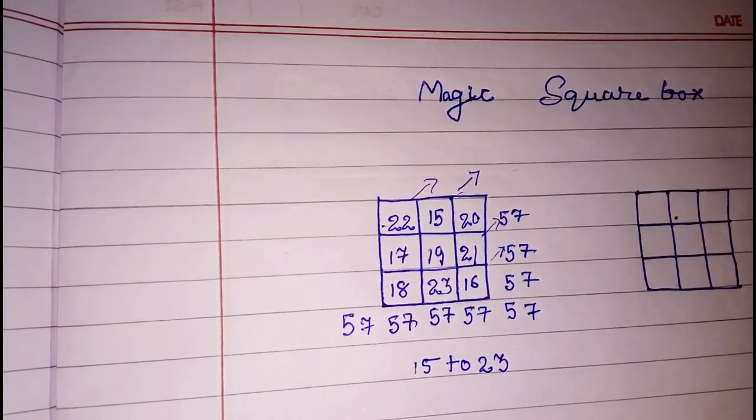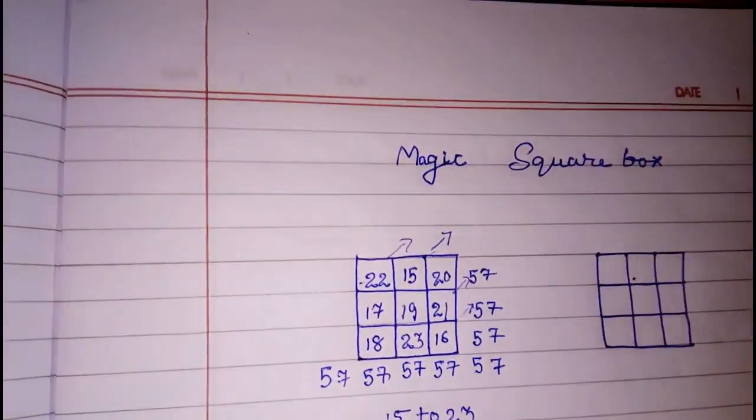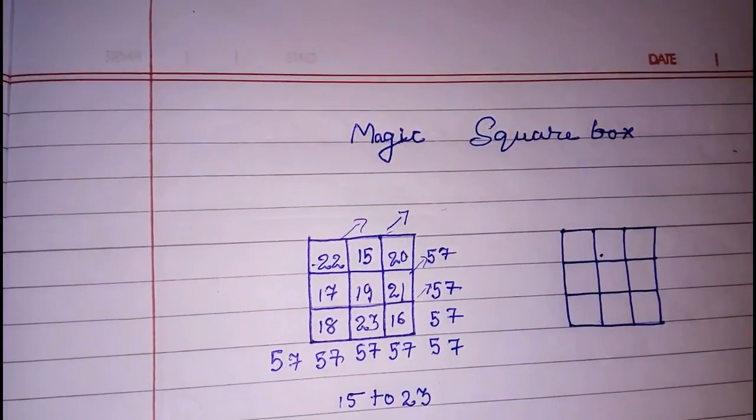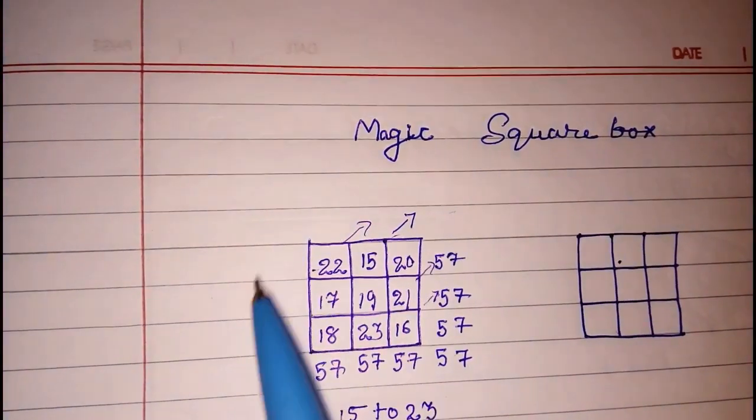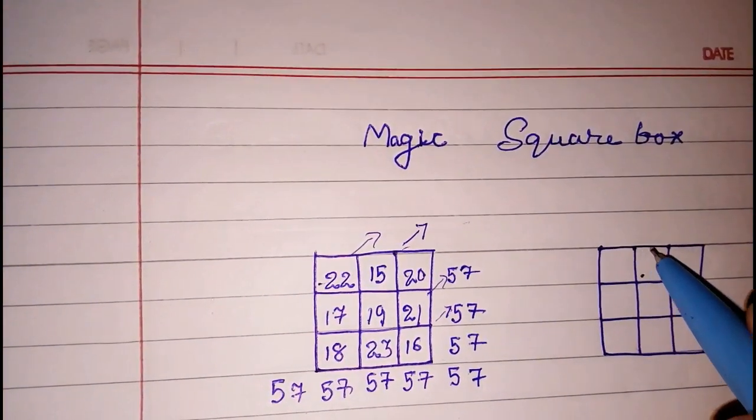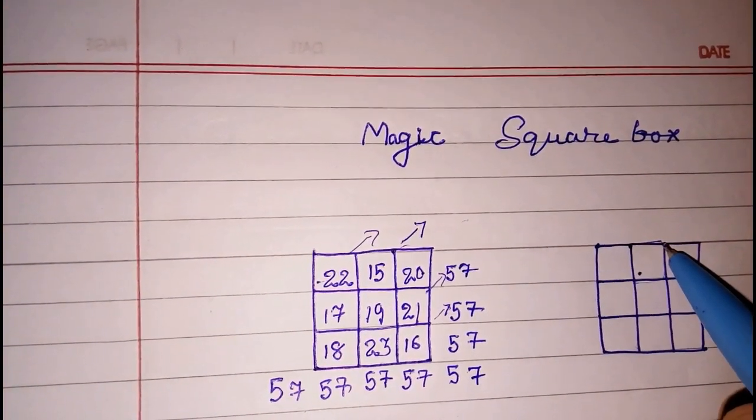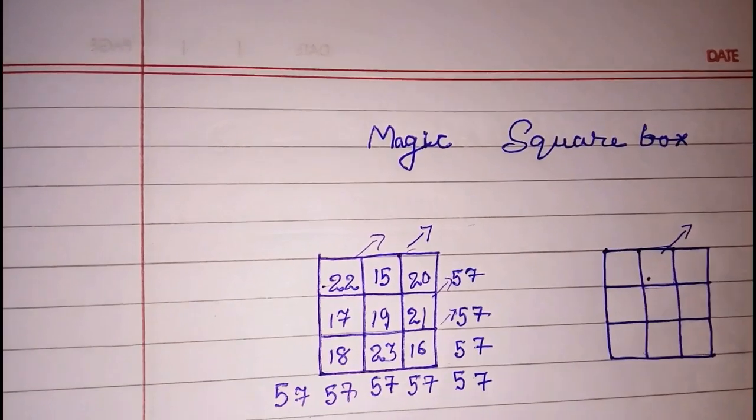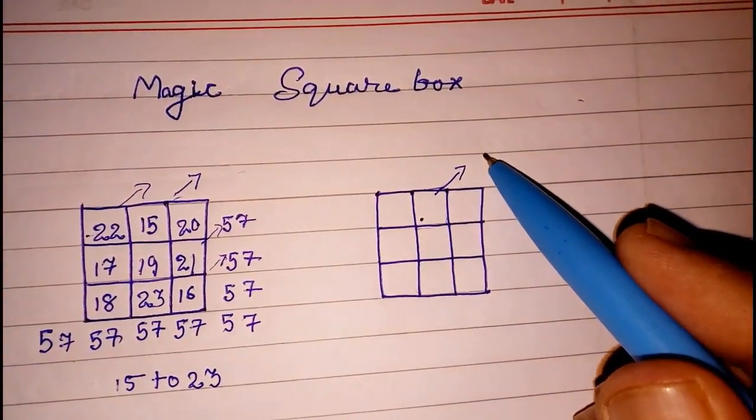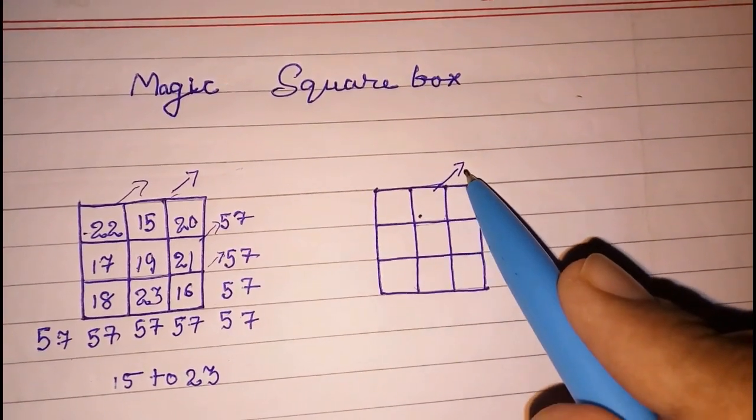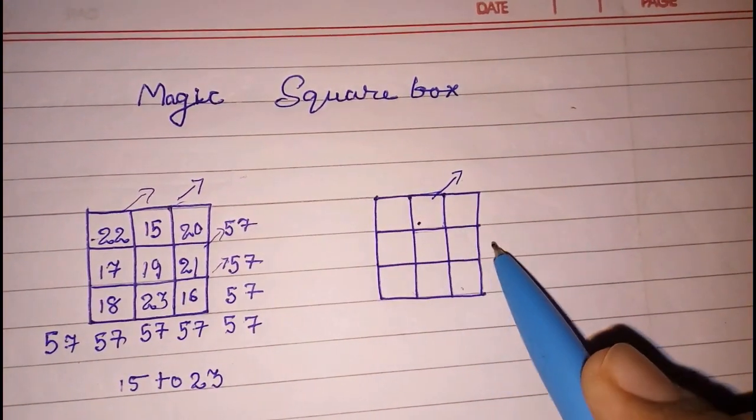So this way we can find, we can also find if any big numbers are there, just we have to follow a pattern. Look here every time, again I am explaining, every time we have to start with this box and move in this way, we have to remember this pattern, every time we have to go this way. If there is no box here, we have to go downstairs.